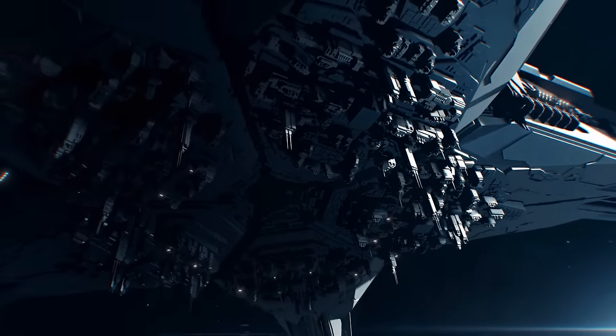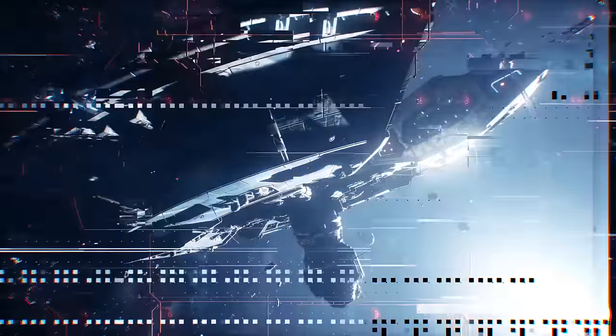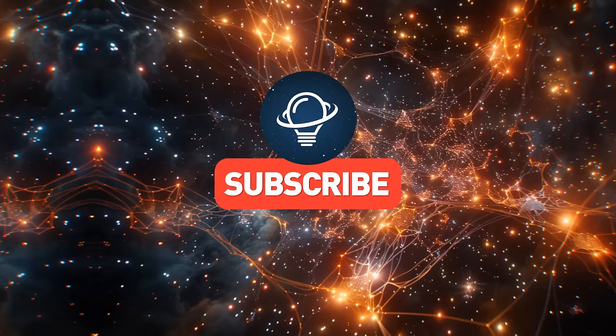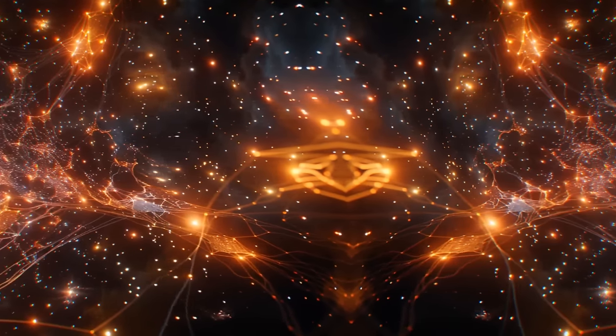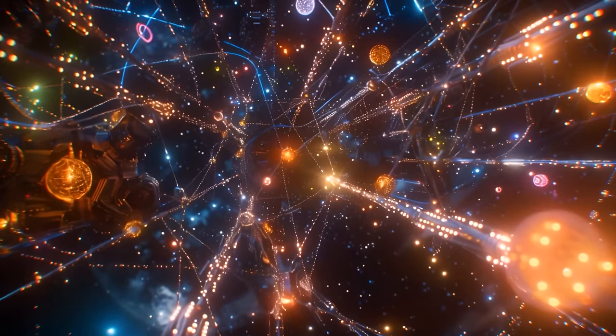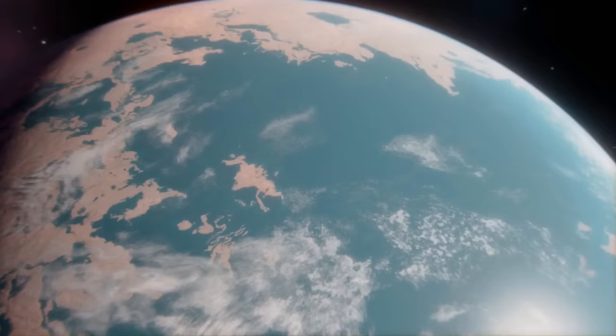They could prefer to live in zero gravity because, in such conditions, you can build very large and very lightweight structures. For example, if you wanted to construct a giant gossamer-thin structure to harvest energy, it would be easier to do so in space than on a planet.